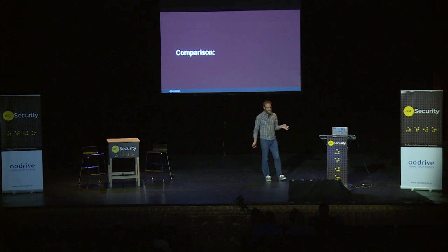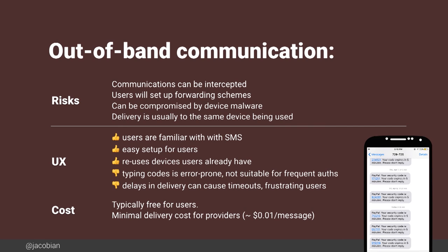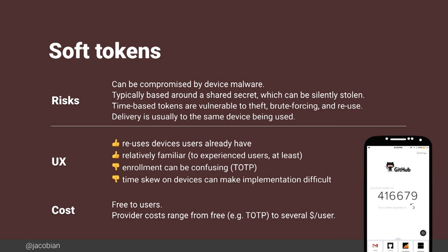To compare these briefly: out-of-band communication is a good first step from a user interface point of view. It uses something the user already has, like a mobile phone, and they're probably already familiar with how SMS messages work. It does bear some risks — it's a lot easier to compromise someone's phone or intercept an SMS message than to physically steal a hard token. But it's free and fairly cheap for providers. Soft tokens probably ratchet the security level a little bit more, though you can still be compromised through device malware. For a while, there was a malicious version of the Google Authenticator app in the Android store that would send the multi-factor tokens somewhere else.